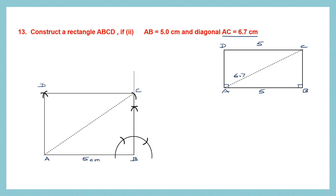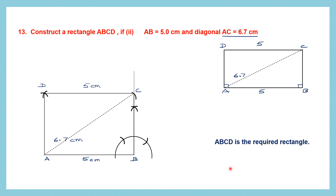Now let's write down all the measurements. This is 5 centimeters, this is 6.7 centimeters — that is the diagonal. So this is what we've been given and we have constructed our rectangle ABCD based on the measurements given — that is the measurement of one side and one diagonal. ABCD is the required rectangle.